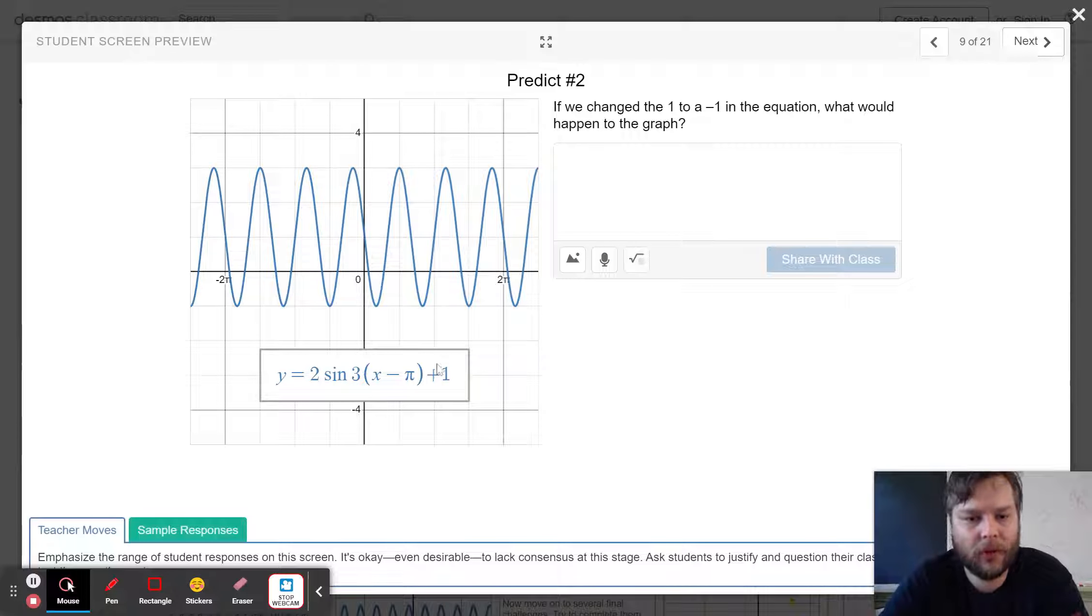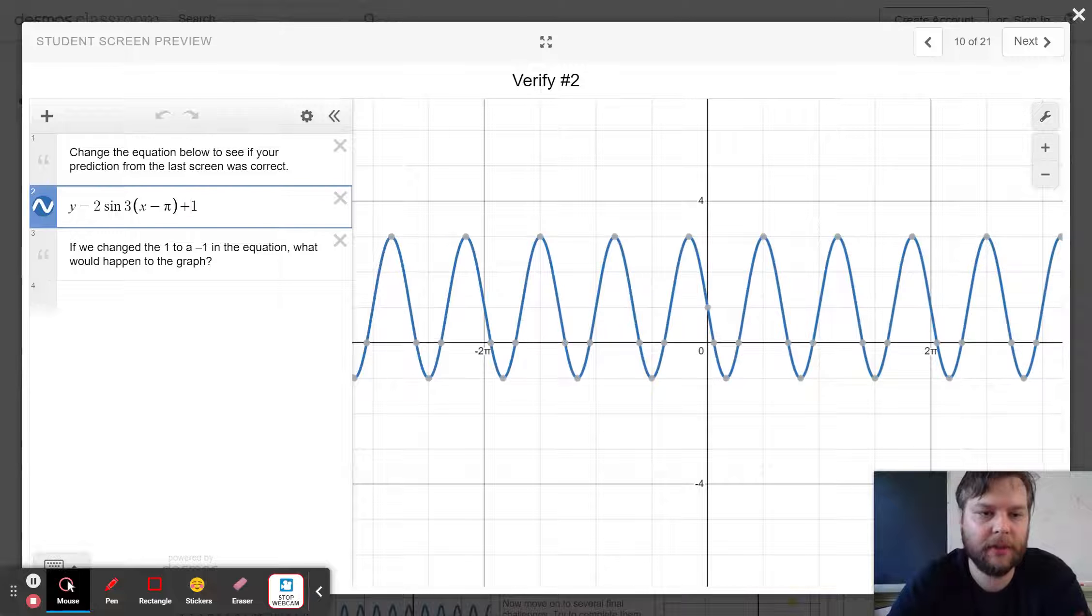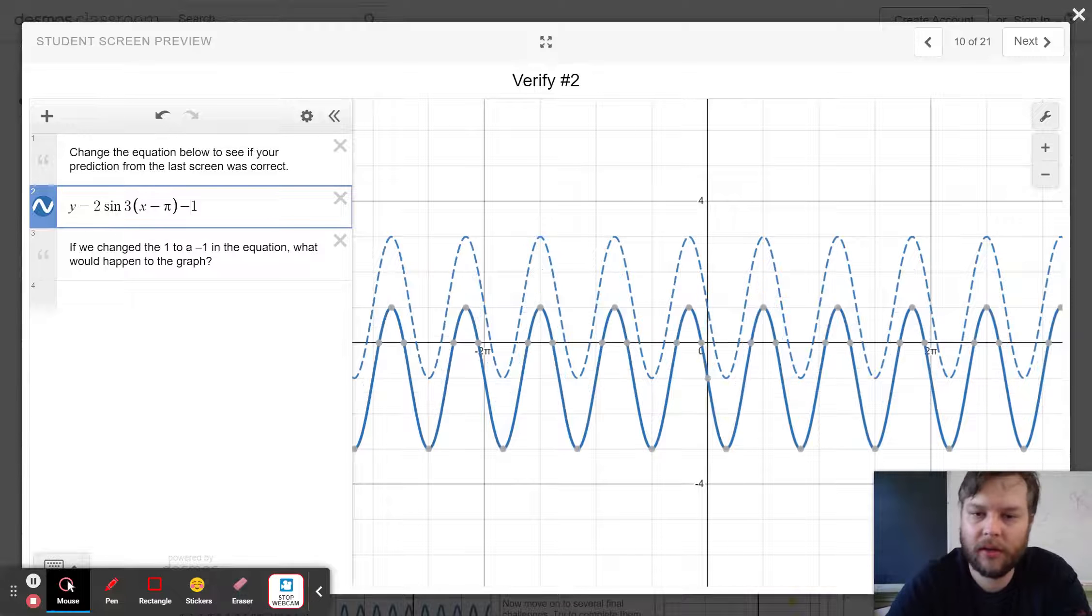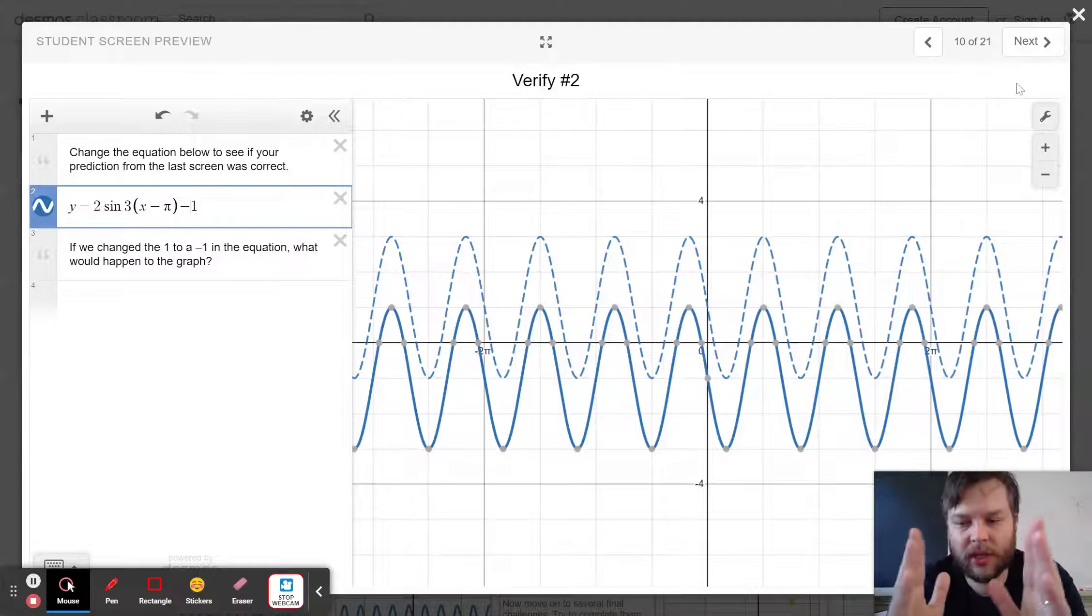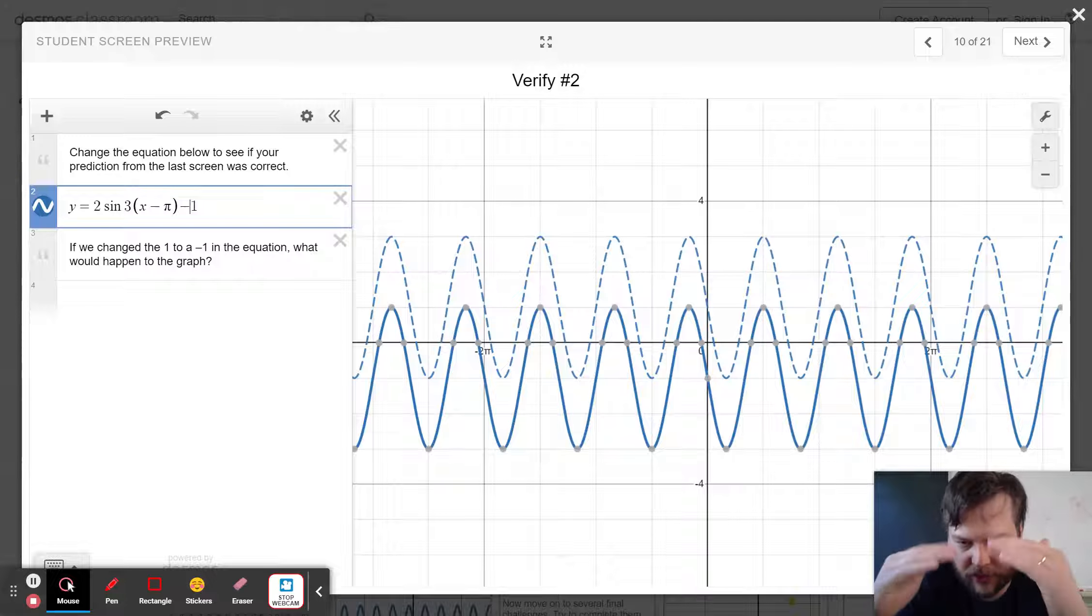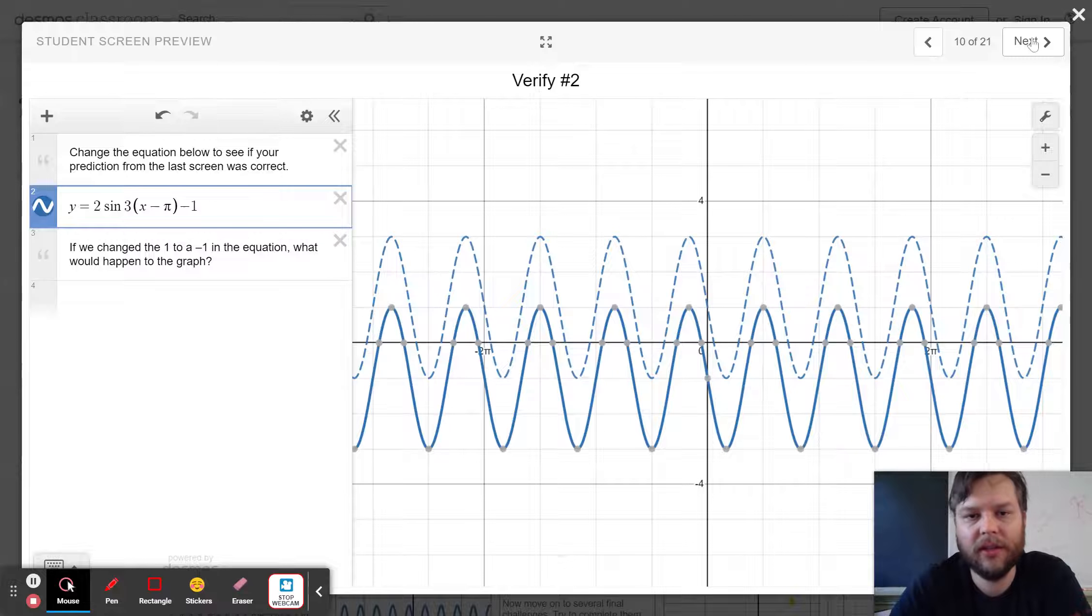If we change the 1 over here to a negative 1, what would happen? Well, positive 1 is the midline of the graph. y equals 1 is the middle. Shifting it to negative 1 moves it down by two steps. There you go. You can see for yourself, didn't change the wavelength, didn't change the amplitude, just shifted it vertically two steps down.